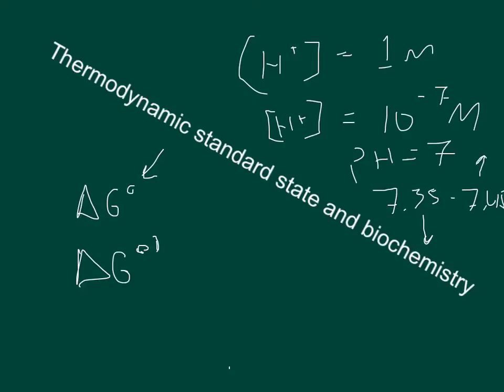However, in biochemistry, 7 is still considered the pH of standard state. One reason is that humans are not the only subjects of biochemistry — every living organism produces chemical reactions considered biochemistry. Because most organisms are roughly around a neutral pH, with several exceptions like acidophiles, biochemistry focuses on a pH of 7.